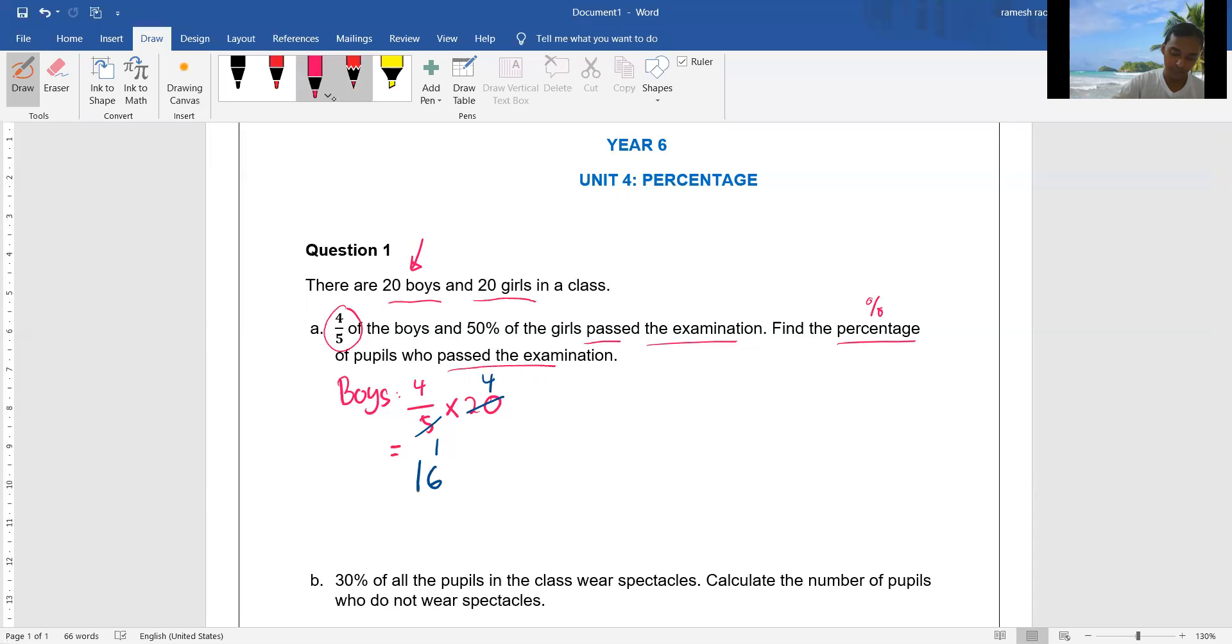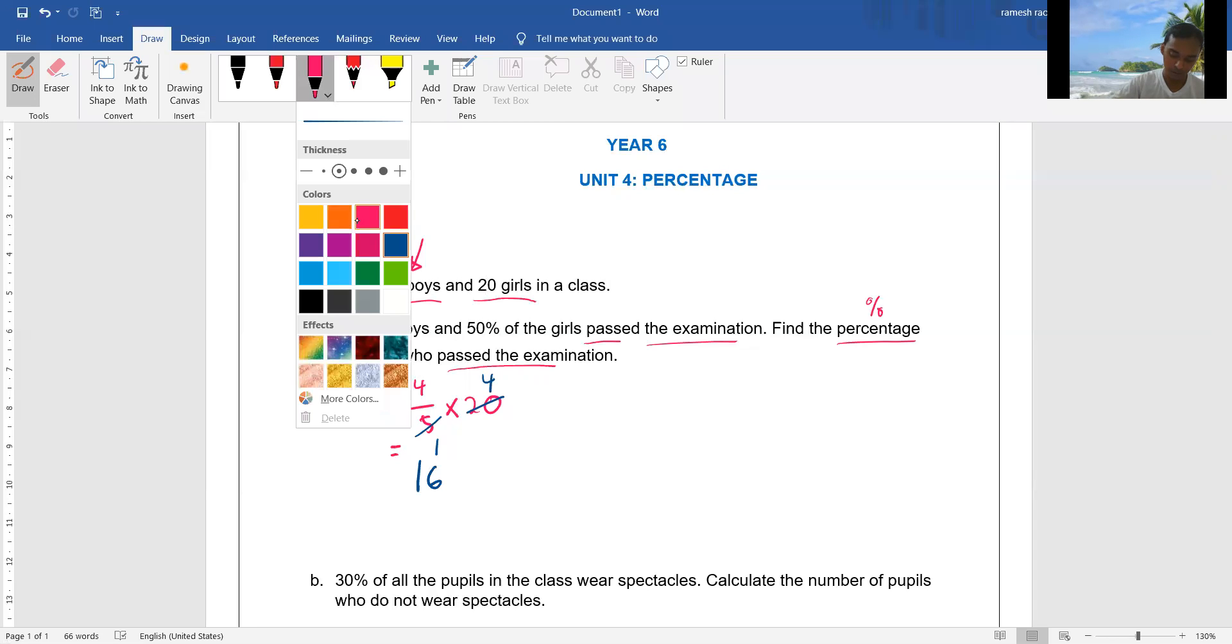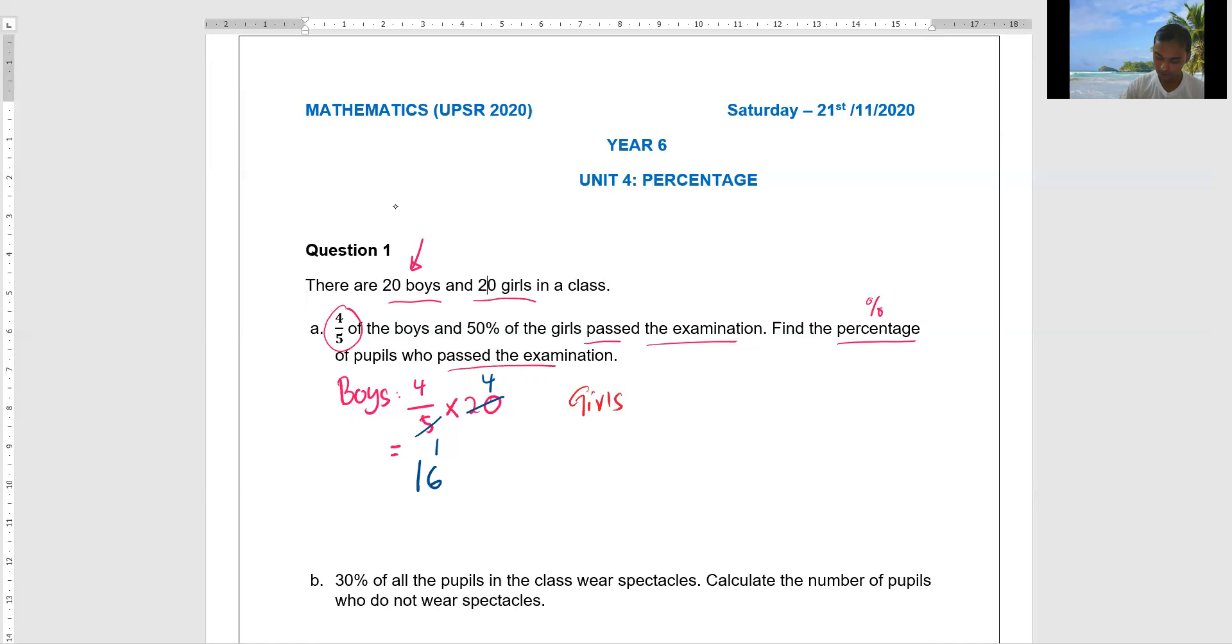The same thing we're going to do for girls also. So girls is 50 percent. So you write 50 over 100 times by 20 girls.